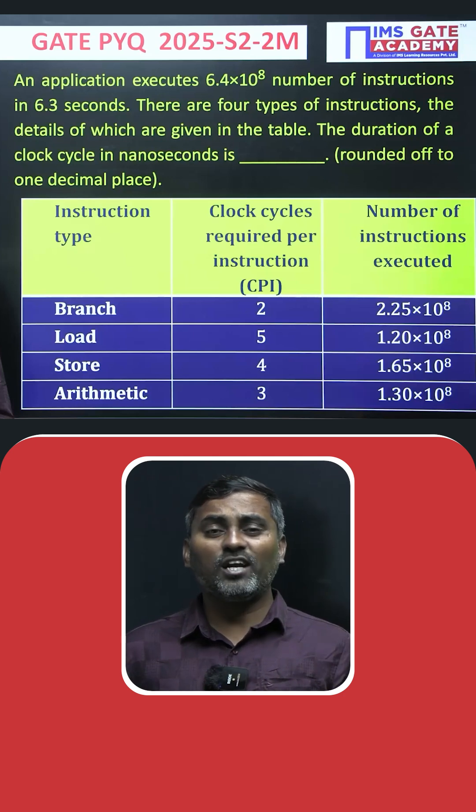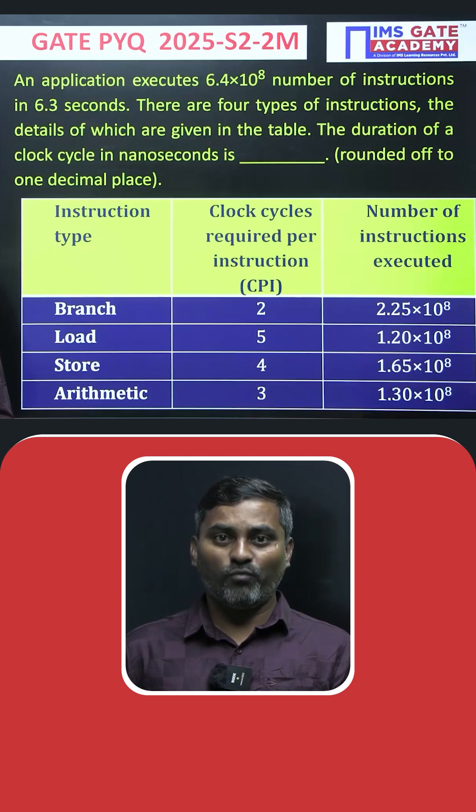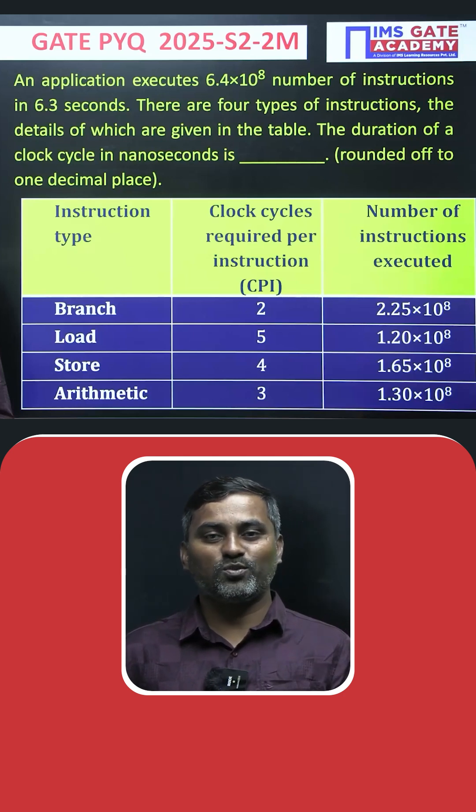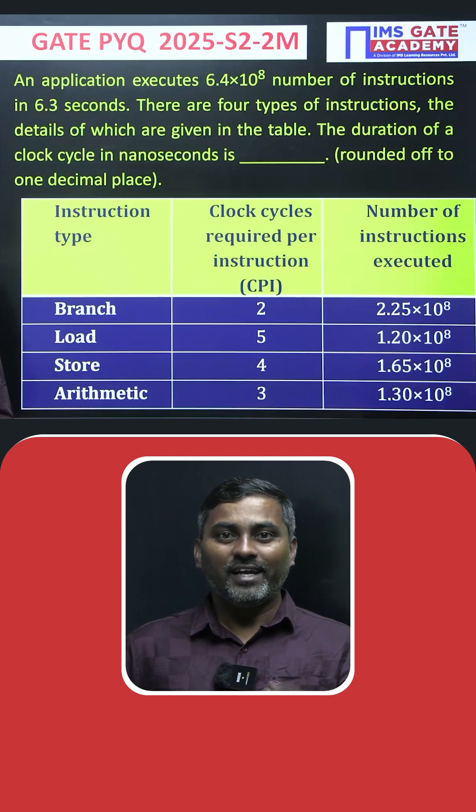Combinedly, all these instructions were executed in 6.3 seconds. The question asks: what is the duration of the clock cycle time in nanoseconds, rounded off to one decimal place?